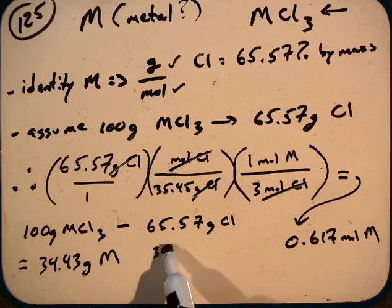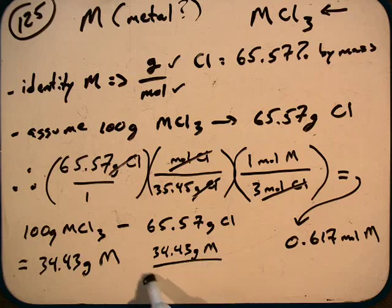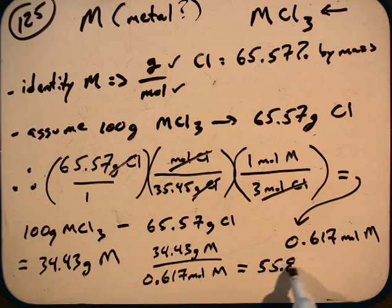We had 34.43 grams of this unknown metal. It was determined that that 34.43 grams of that metal correlates with 0.617 moles of that metal. And so that gives us a value of 55.80 grams per mole.